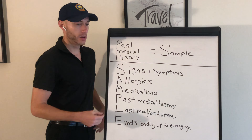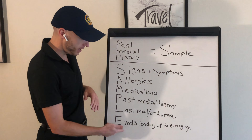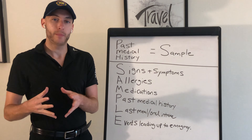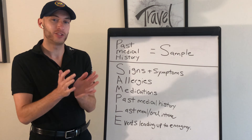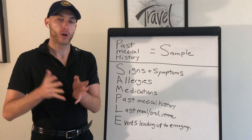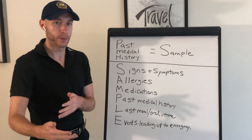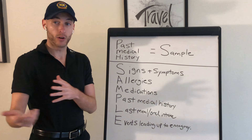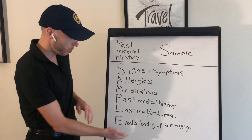L is last meal or oral intake — when was the last time you ate or drank something? E is the events leading up to the emergency — what happened just before you called? What were you doing? You're really looking for any changes. Did you do something you normally don't do? What happened when this all started? Maybe they were doing heavy lifting and now have chest pain or abdominal pain.